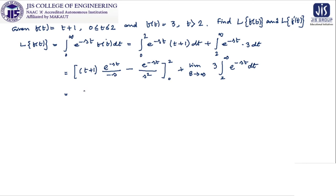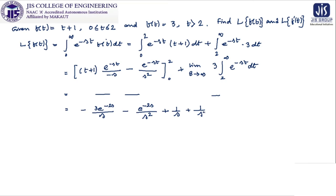After performing the calculations and simplifications, the result is: minus 3e^(−2s)/s minus e^(−2s)/s² plus 1/s plus 1/s² plus 3e^(−2s)/s. Simplifying finally gives us 1/s plus (1/s²)·(1 − e^(−2s)).